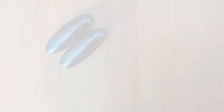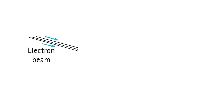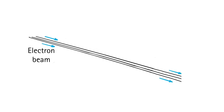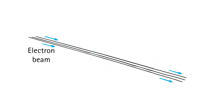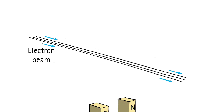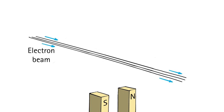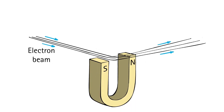Consider a beam of moving charged particles, around which you'll find a magnetic field. Bring a magnet to this beam, and the interplay of magnetic fields results in a deflecting force on the beam.